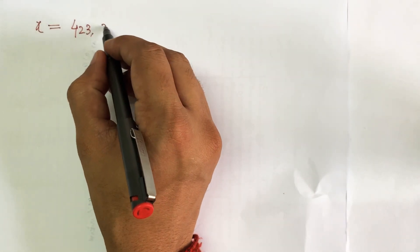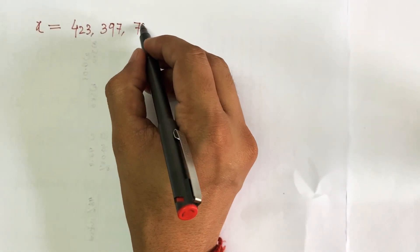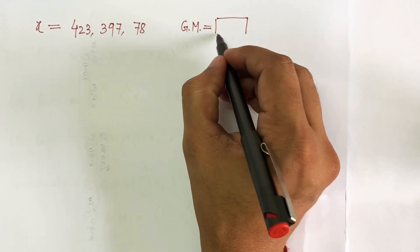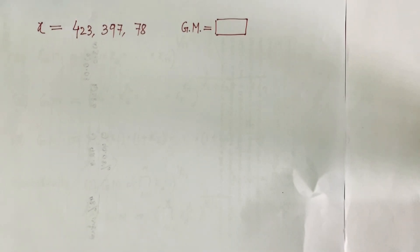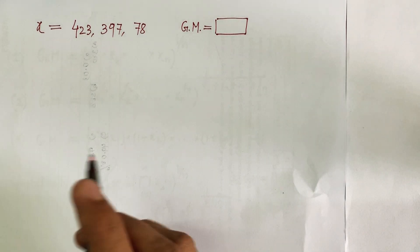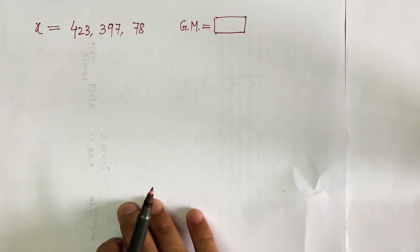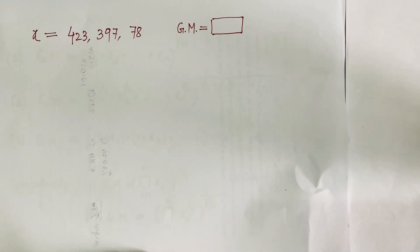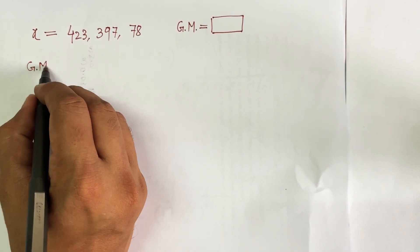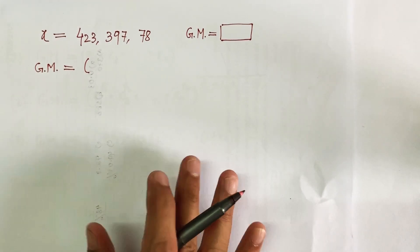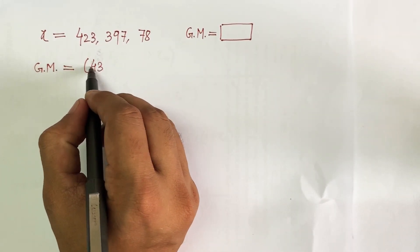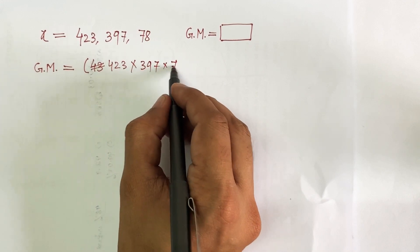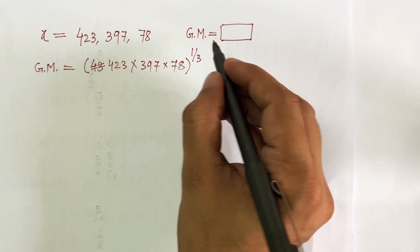I'll take a simple example with three values of X: 423, 397, and 78. I want to find the geometric mean of these three numbers. Recalling the first formula, I multiply the values and raise to the power 1/n divided by the count, giving: geometric mean = (423 × 397 × 78) raised to the power 1/3, since n equals 3.